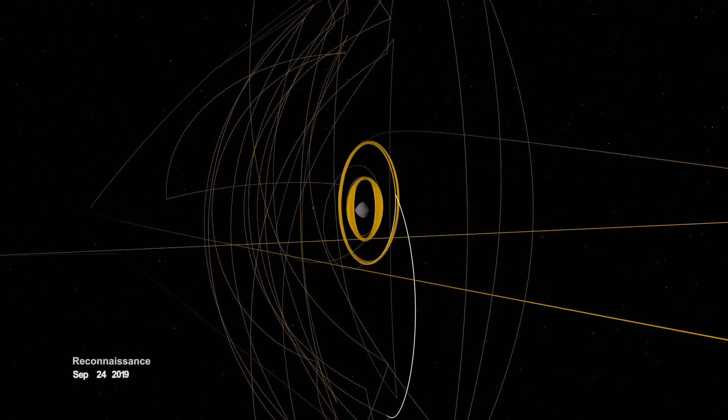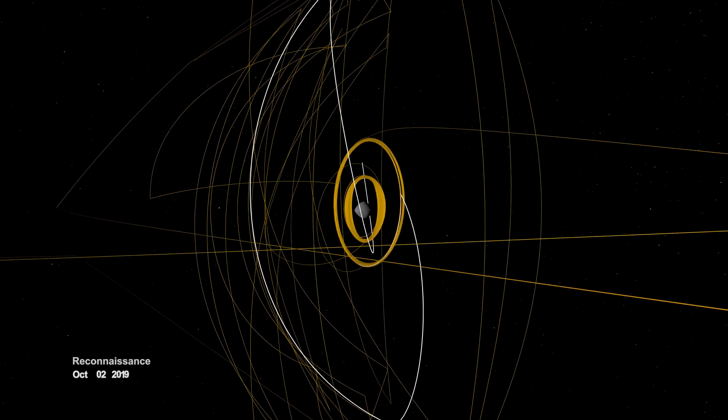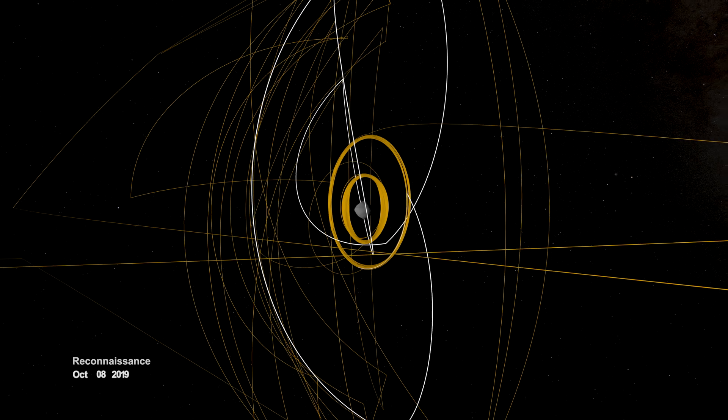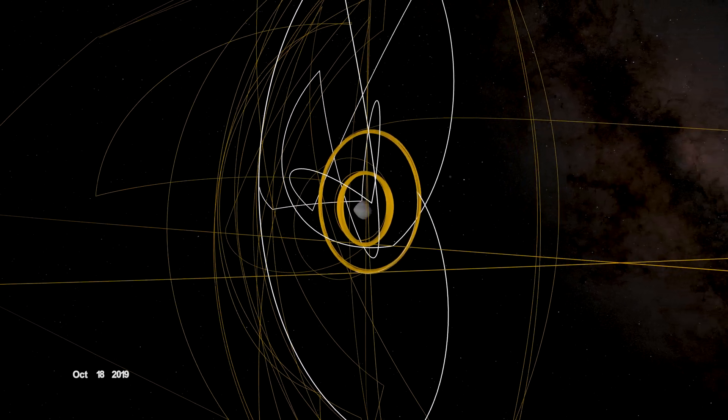In September, it began reconnaissance on four candidate sample collection sites, potential locations on Bennu to touch down and collect a sample later in the mission.